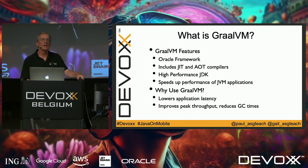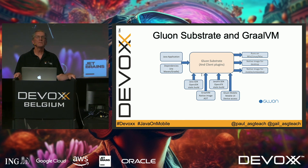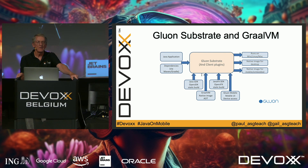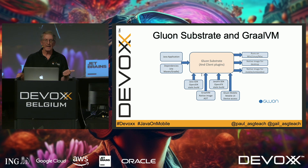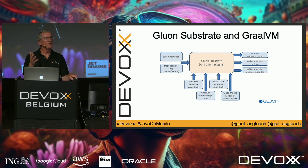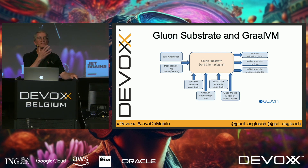The reasons to use GraalVM include lower application latency, improved throughput, and reduced garbage collection times. Native images are required for mobile targets — you can't have a VM running on a mobile device. The block diagram shows all the pieces needed: in the middle is the Gluon Substrate component with plugins; on the left is your Java application and POM file; underneath are the Java SDK, JavaFX SDK, and the GraalVM AOT compiler. On the right, you can run your app on the desktop to debug, then create native images for iOS and Android.